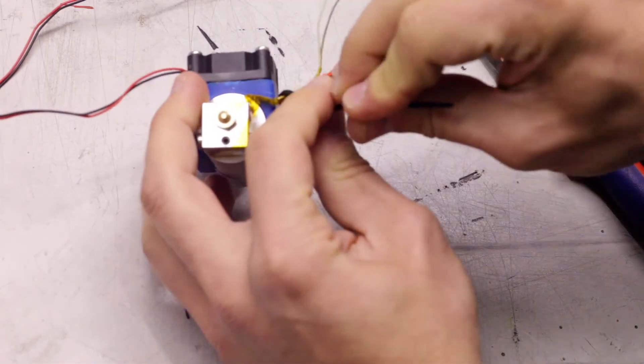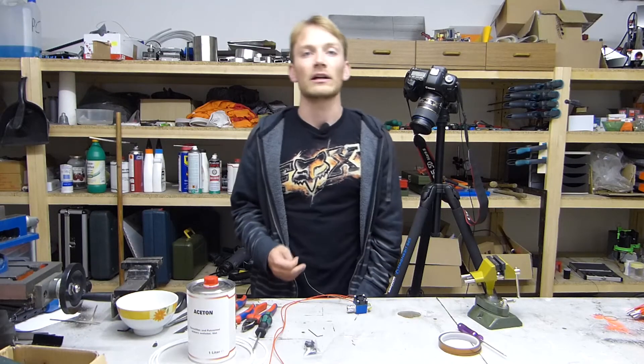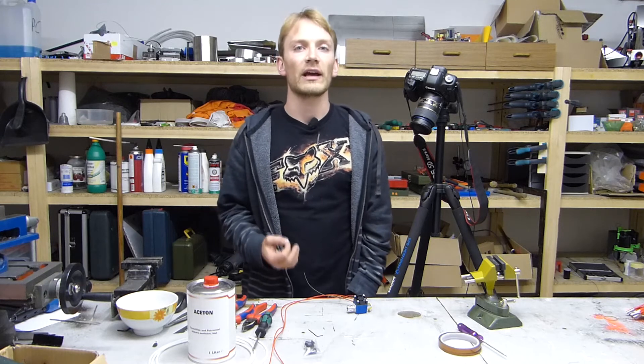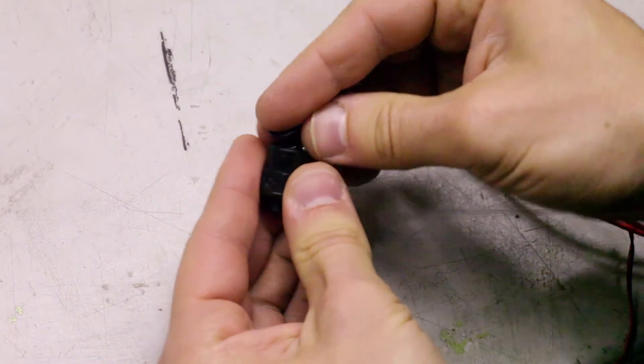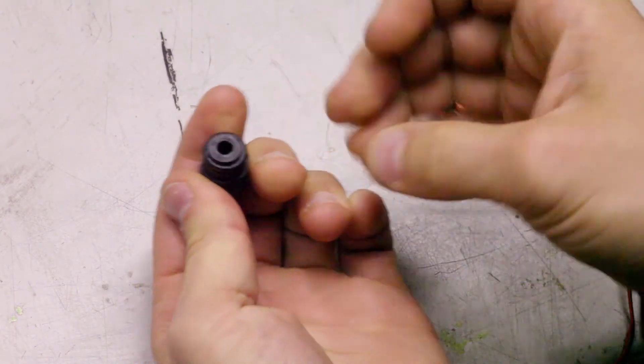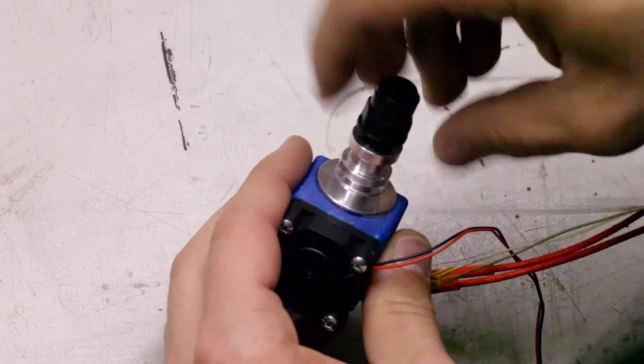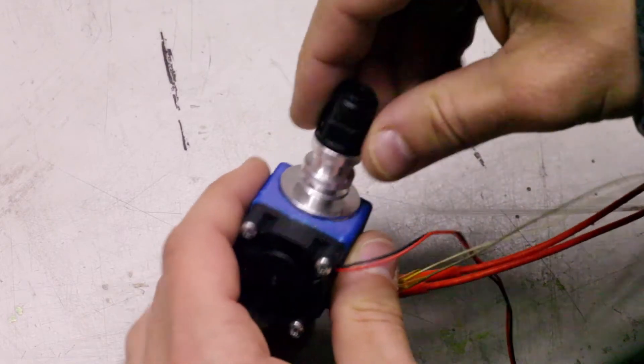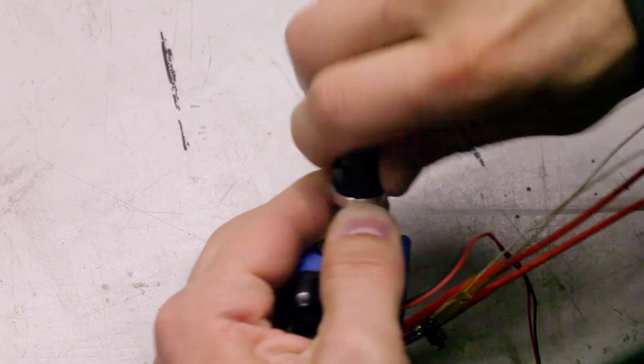If you're assembling a direct drive hotend, the assembly is basically done at this point. If you've got a Bowden hotend, you'll also need to add the Bowden connector. Clip the insert into the main body of the connector and screw that whole thing into the top of the heatsink. Don't use tools to tighten this down, as the plastic thread will easily snap off if you over-tighten it. Just give it a firm twist by hand.